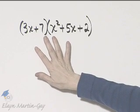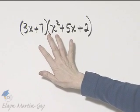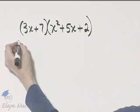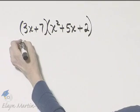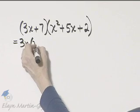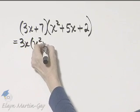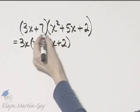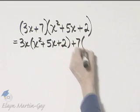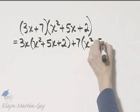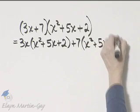You can multiply these two using a vertical or horizontal format. I'm going to go ahead and use a horizontal format for this. This will be 3x times this trinomial, x squared plus 5x plus 2, and then plus 7 times the same trinomial, x squared plus 5x plus 2.